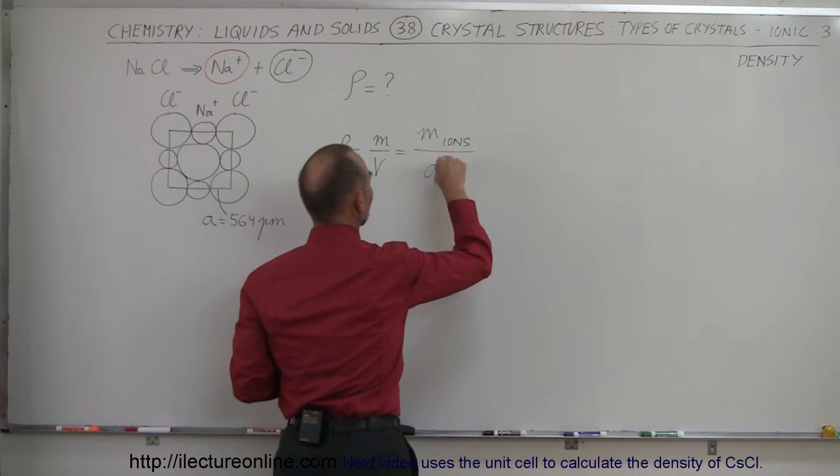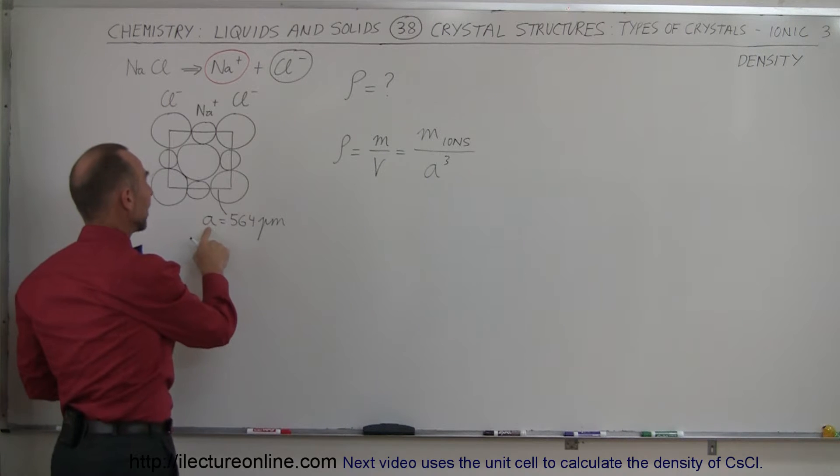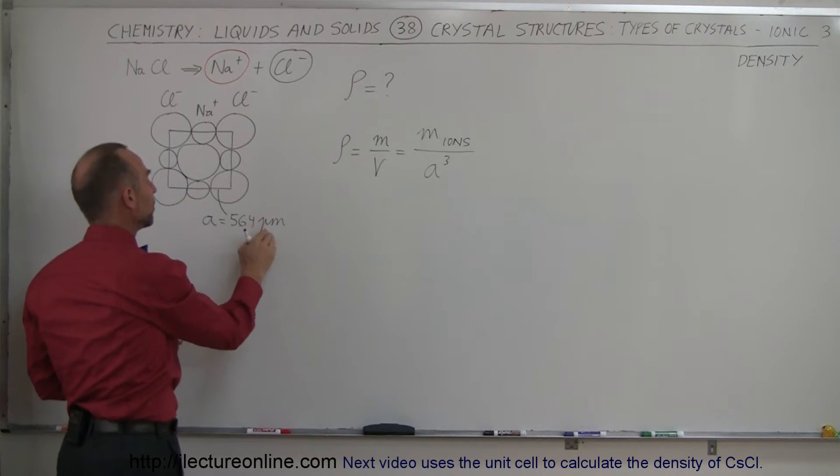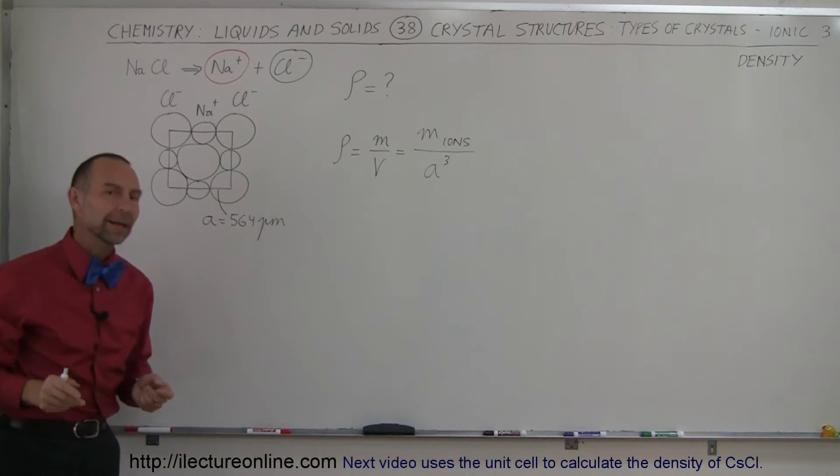Of course the volume of the unit cell is the side cubed. So we have to determine the side. In this case we already know that the side of this unit cube is 564 picometers which is basically the sum of the radii of the two chlorine ions and plus the diameter of the sodium ion.